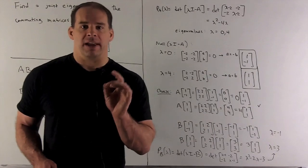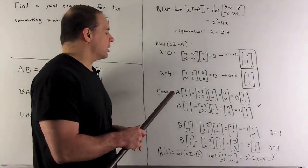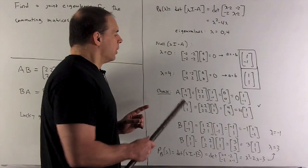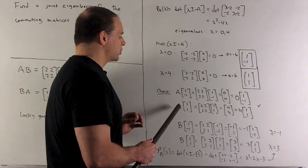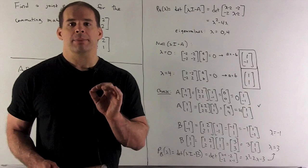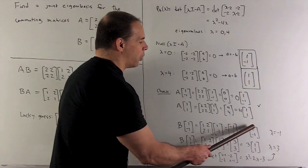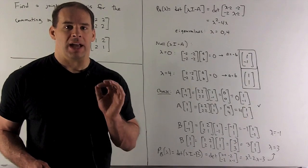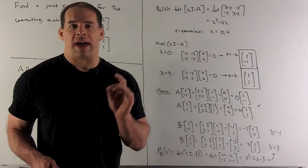Let's verify that these are eigenvectors of A — we apply A to each vector and confirm that the eigenvalue times the vector comes out. In the first case we get 0 times [1, -1], and the second case checks out as well. Now let's see what happens for B. Applying B to [1, -1] gives minus 1 times [1, -1], so it's an eigenvector with eigenvalue minus 1. Applying B to [1, 1] gives 3 times [1, 1], so it's an eigenvector with eigenvalue 3 — checking our earlier work.